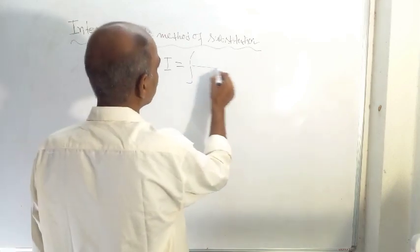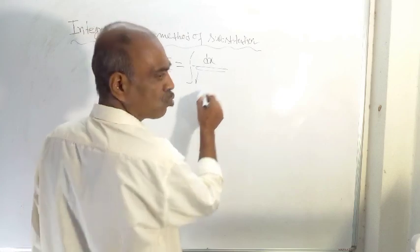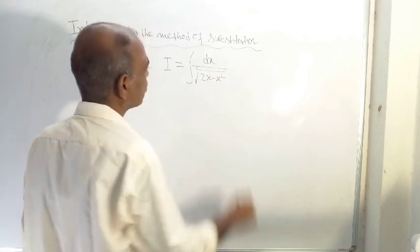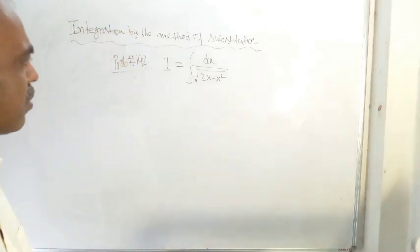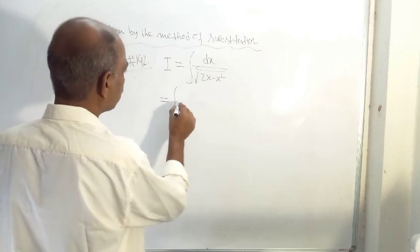The problem is integration of dx divided by root of 2x minus x square. This is the given problem and the solution is of course very easy. This is equal to integration of dx under root...